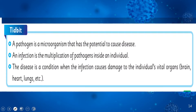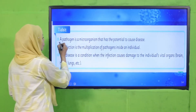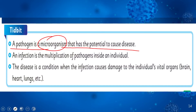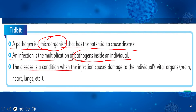Here are some tidbits. A pathogen is a microorganism that has the potential to cause disease. An infection is the multiplication of a pathogen inside an individual. The disease is the condition when the infection causes damage to the individual's vital organs — brain, heart, lungs, etc.